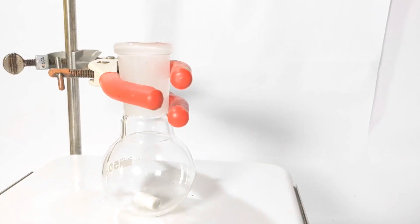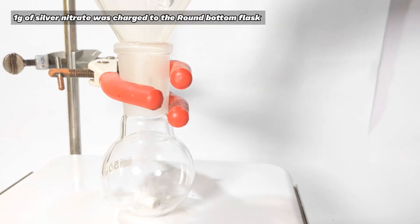Start by fixing a 50 milliliter small round bottom flask on a magnetic stirrer with a stirring bar inside. Using a funnel, 1 gram of silver nitrate was charged into the flask.